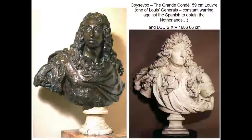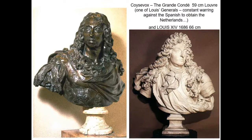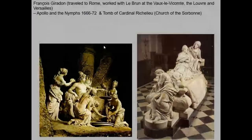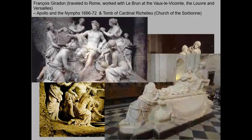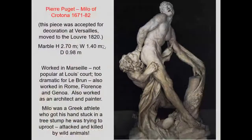Works by Coysevox the sculptor include portrait busts — one of Louis XIV to the right and one of his general, the Grand Condé, to the left — with others imitating his style. Also in Baroque style and leading into the Rococo, sculptures in France could be located in grottos or stone niches out in the garden. It's almost as though the sculptures are like actors in a play happening outdoors.